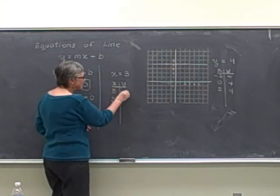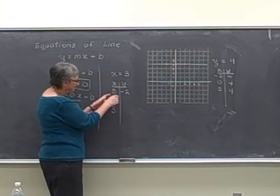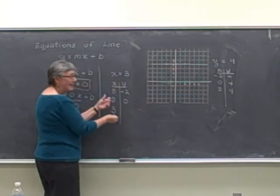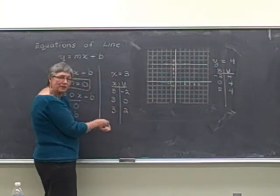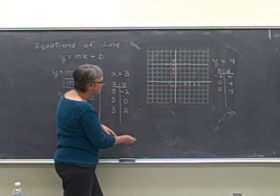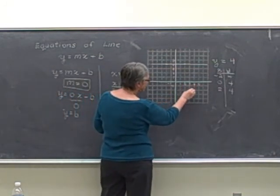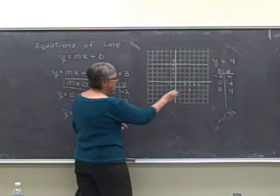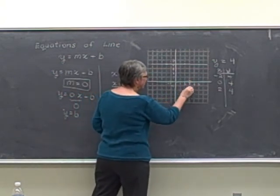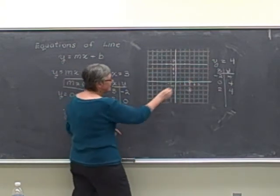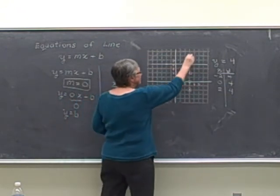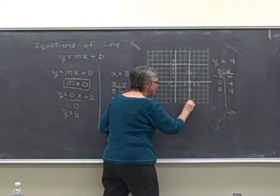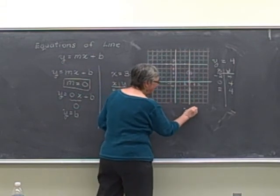I choose y equal to negative 2, x is equal to 3. Y equal to 0, x is equal to 3. Y equal to 2, x is equal to 3. When I graph these points, 3, negative 2, 3, 0, 3, positive 2, we see that these lines are lining up in a vertical line, straight up and down. And that's our line x equals 3.